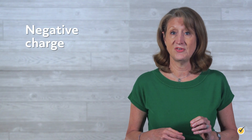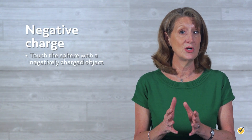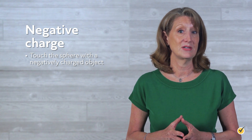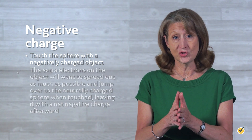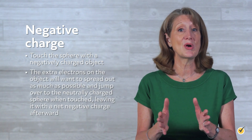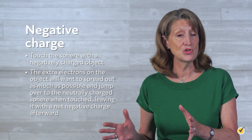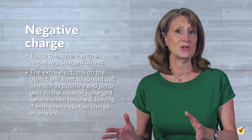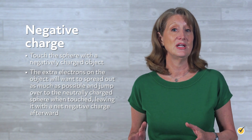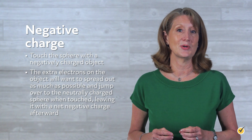If, instead, you wanted to obtain a negative charge on the sphere, you could touch the sphere with a negatively charged object. The extra electrons on the object will want to spread out as much as possible and jump over to the neutrally charged sphere when touched, leaving it with a net negative charge afterward.